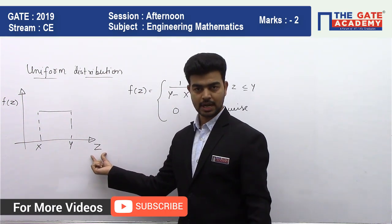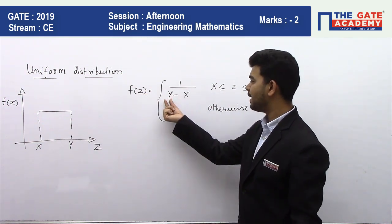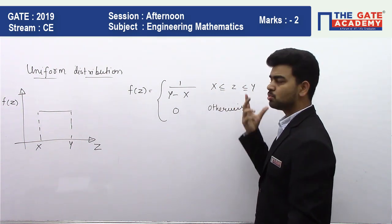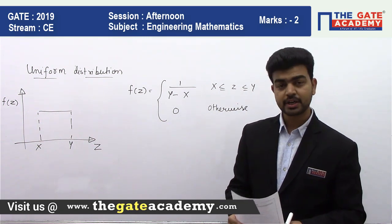So here, if Z is my random variable, the probability density function is given by 1 by Y minus X when Z is varying from X to Y, and otherwise it will be 0. So here we can say our correct option